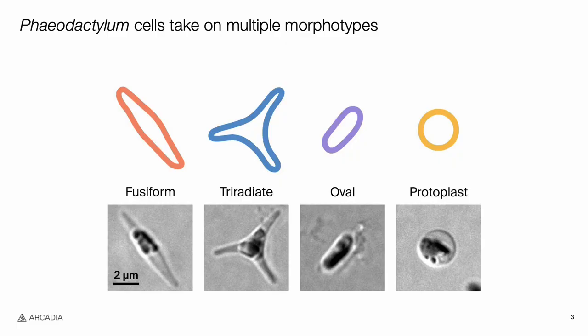These cells are unique in their ability to take on multiple different morphotypes. As you can see, they can form fusiform cells which are tapered on both ends, these triangular tri-radiate cells, oval cells, or cell wall-less protoplasts.